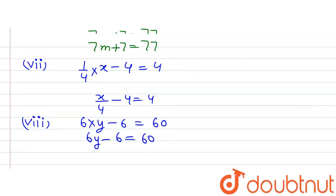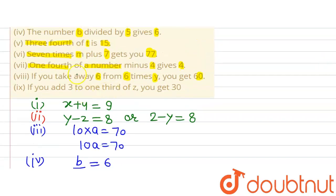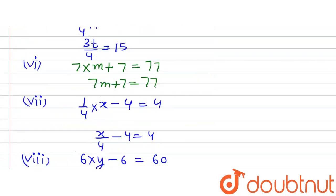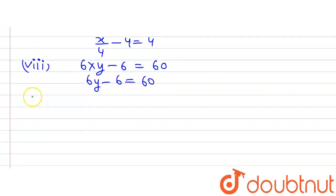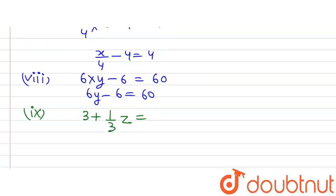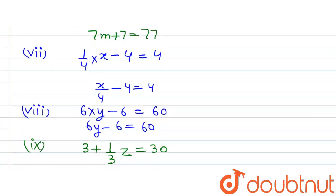The ninth part says that if you add 3 to one third of z, you get 30. One third of z plus 3 equals 30, so the equation is z/3 + 3 = 30. This is the equation representing the ninth part of the question.